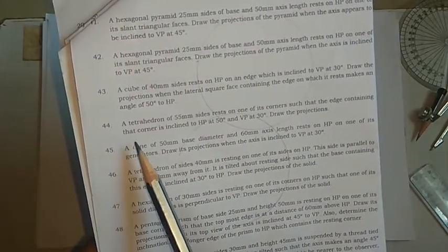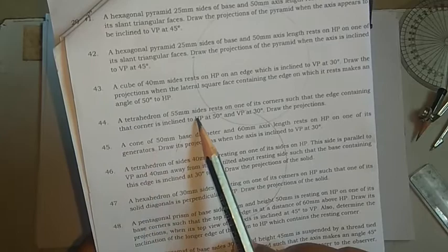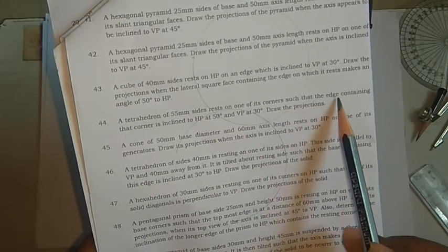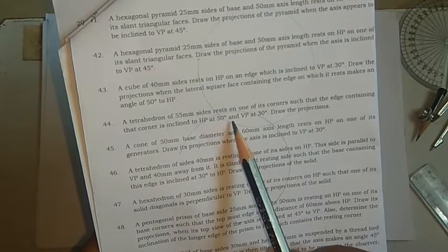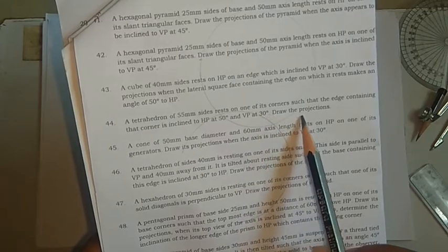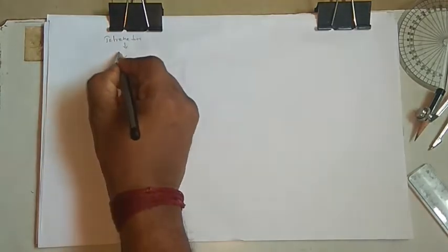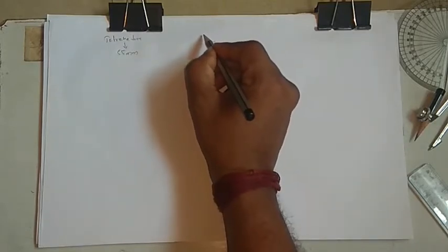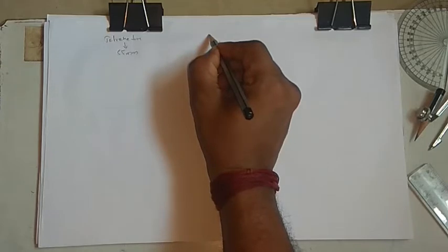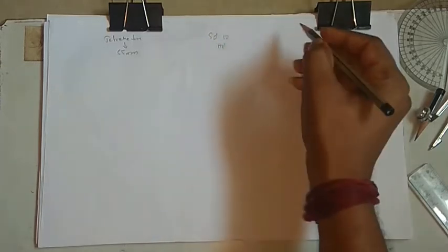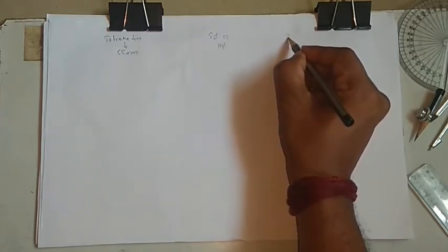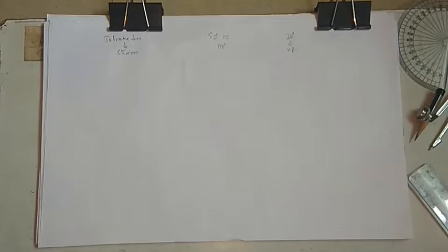Here we go with one more tetrahedron problem. A tetrahedron of 50mm side rests on one of its corners such that the edge containing that corner is inclined at 50 degrees to the HP and at 30 degrees to the VP. Draw the projections. The edge length is 55mm.